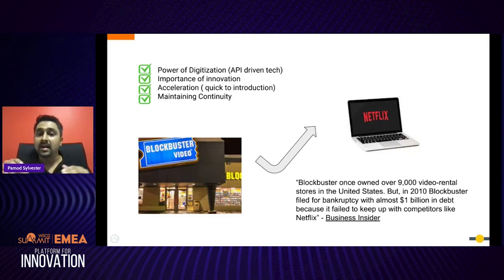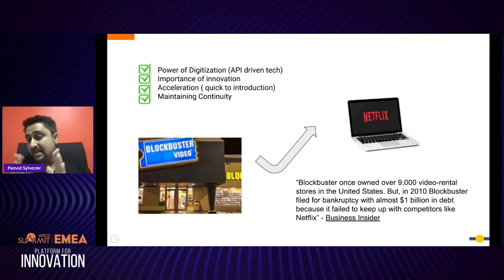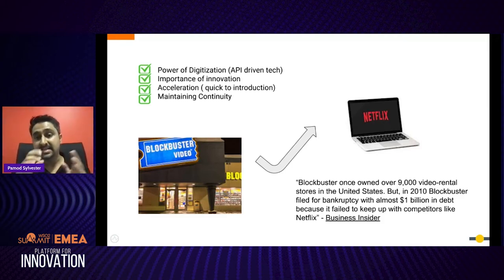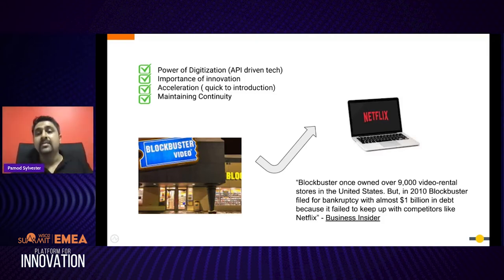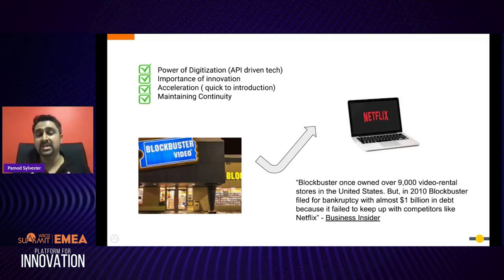When Netflix launched their streaming platform, Blockbuster tried to match them and introduced an equivalent, but still couldn't capture Netflix's market. Netflix maintained continuity in their innovation cycle — they kept adding new things more frequently, making it nearly impossible for Blockbuster to catch up. To preserve your position, you have to be quick to introduce your solution to the market and maintain continuity.